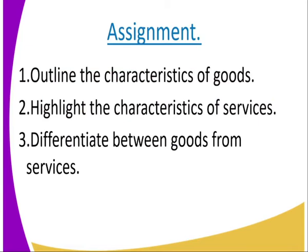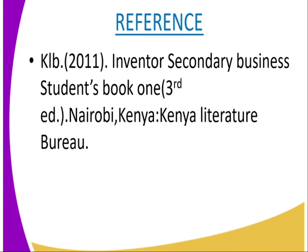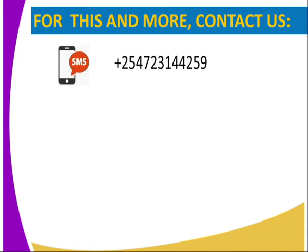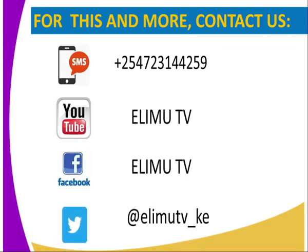Activity: one, write the characteristics of goods. Two, highlight the characteristics of services. Three, differentiate goods from services. For reference, get the KELB 2011 Inventa Secondary Business Student Book 1. If you have any questions, reach us through SMS, YouTube, Facebook, or Twitter. Stay tuned.